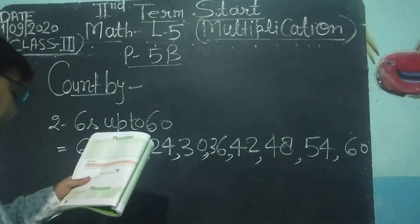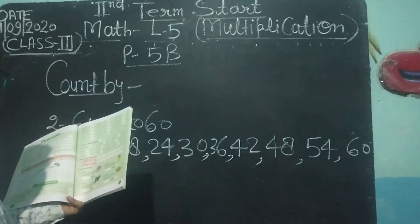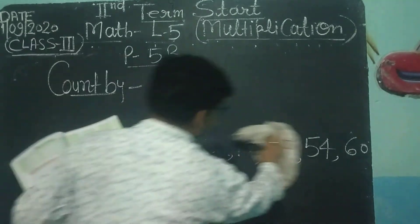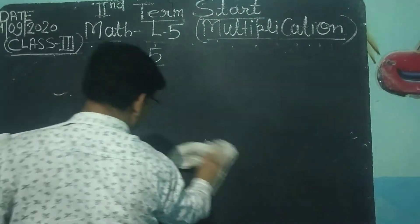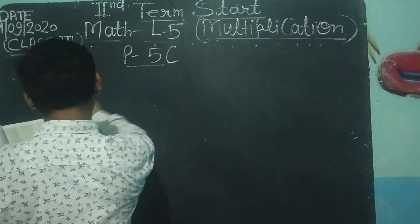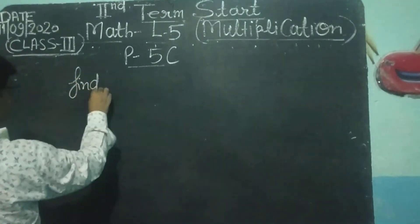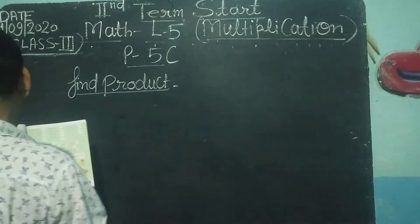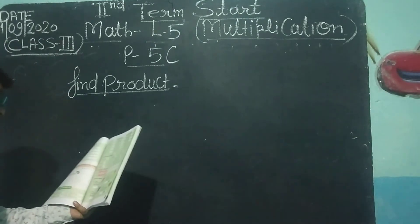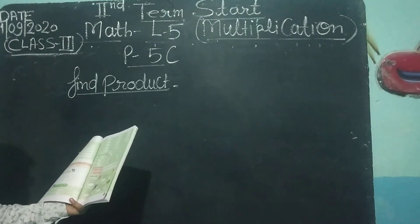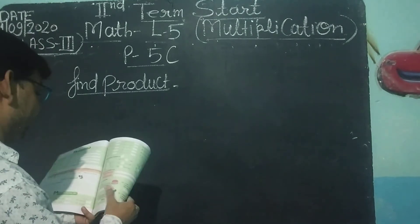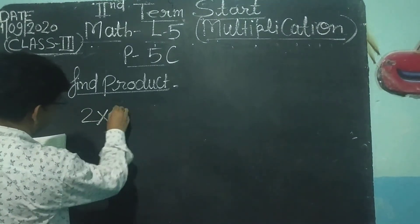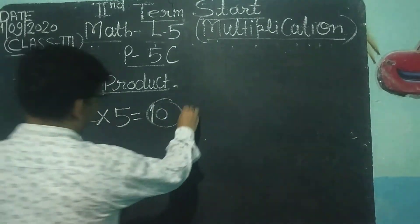अगली practice आती है 5C। 5C में product बनाना है — write the product। 5C में: multiplication of any counting number obtained from multiplying this counting number is called product. किसी भी दो numbers का multiplication होता है जिसका product कहलाता है। जैसे 2 × 5 = 10 होगा, जिसको हम product कहेंगे।